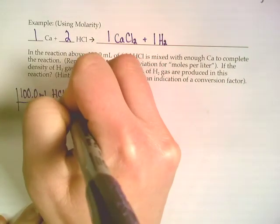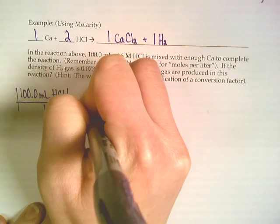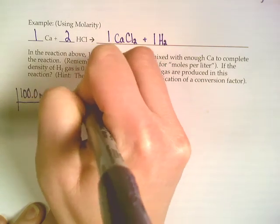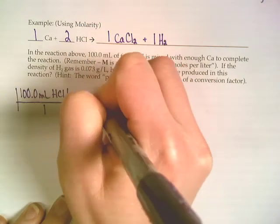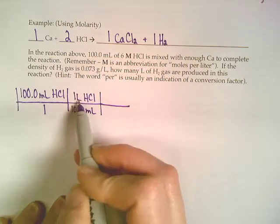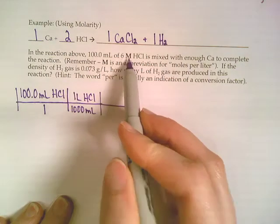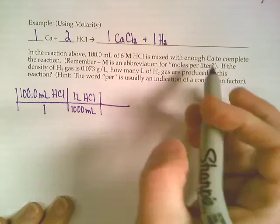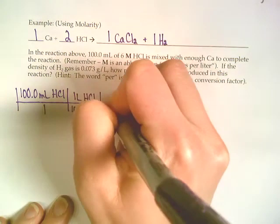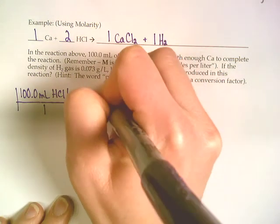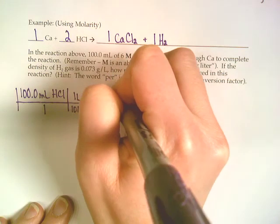Now I could get rid of those liters using this 6 capital M—that there's 6 moles per liter. So for every 1 liter's worth of HCl, we have 6 moles worth of HCl packed into that volume.